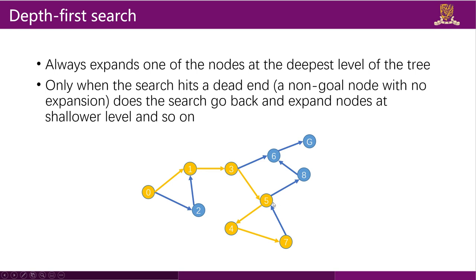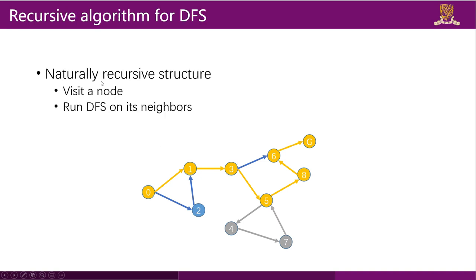Node 7 has only one child, which is node 5, but we are doing graph search so we will not visit node 5 twice — meaning we are at a dead end. The algorithm goes back to node 5 and visits its other child, node 8, and then similarly reaches node 6 and the goal.